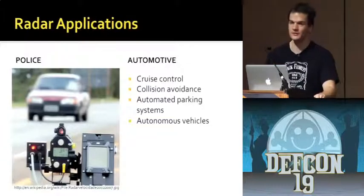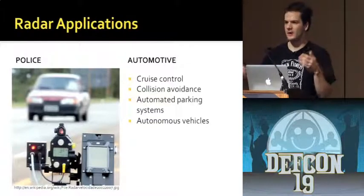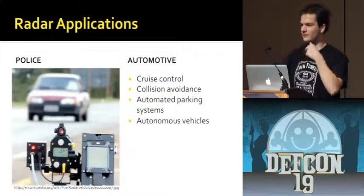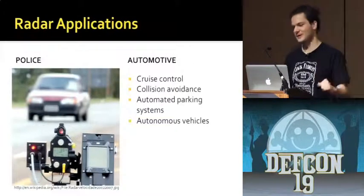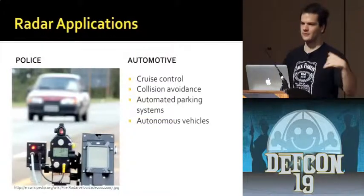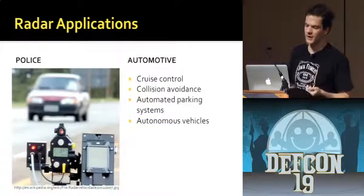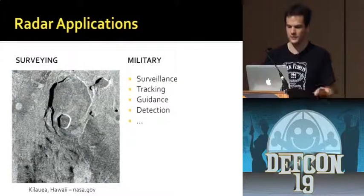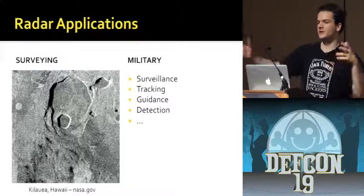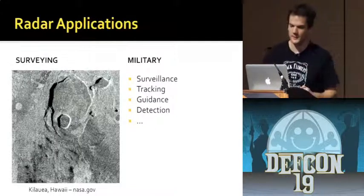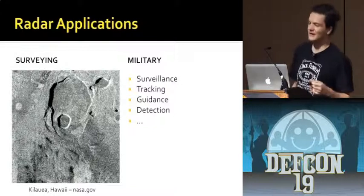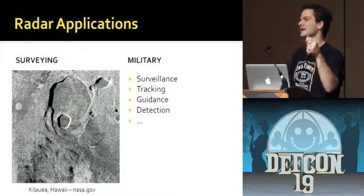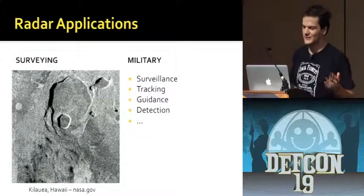On the automotive side, there's a lot more of this stuff. Any time you want to track things close by, there are radar systems — also LiDAR to some extent. They're using it for cruise control so your car can follow a certain distance behind the next car, collision avoidance, automated parking, and autonomous vehicles in general are going to need a ton of this technology. It's used for surveying — you can fly a plane over terrain and get a 3D image. And the military uses it for practically everything.